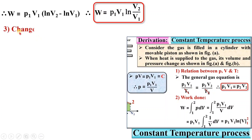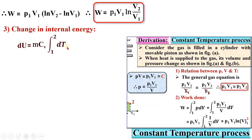Next, change in internal energy. We know that dU = mCv ∫dT. Here temperature is constant, so dT = 0, and therefore dU = 0.